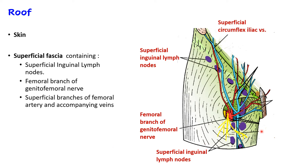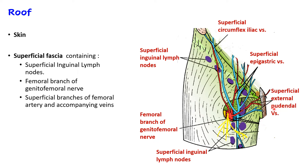Also present in the superficial fascia are the superficial branches of the femoral artery and their accompanying veins. These are three arteries: superficial circumflex iliac artery, superficial epigastric vessels, and superficial external pudendal vessels. Additionally, the great saphenous vein, which is the longest vein in our body, also runs in the superficial fascia of the roof of the femoral triangle.